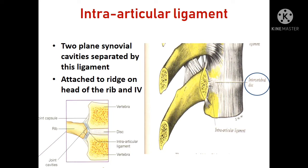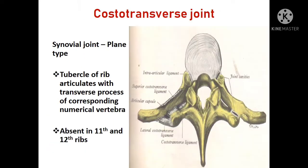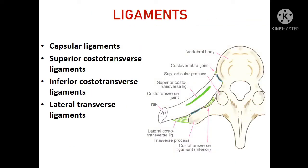The next joint is the costotransverse joint. It is a synovial joint, plane variety. The articulation is between the tubercle of the rib with the transverse process of the numerically corresponding vertebra. The tubercle is absent in the 11th and 12th ribs, so there is no joint at those levels.